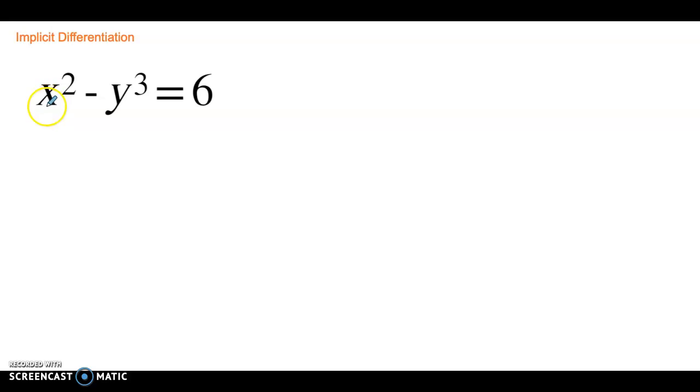So the idea here with implicit differentiation: we are going to deal with the x values like normal, taking the derivative of them. The y values, we are thinking that y is some sort of function in terms of x. We don't know what the function is, we don't need to know what the function is, but we think of y as a function of x. So basically what that means is chain rule.